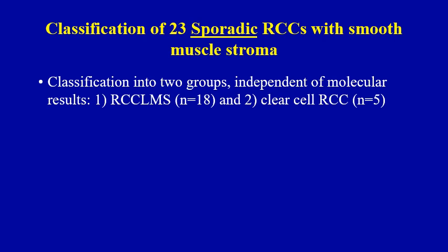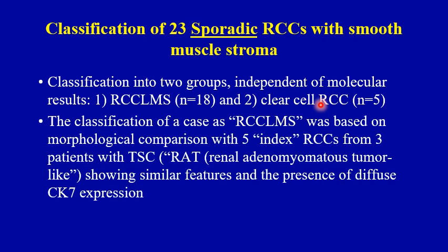To investigate these two questions, we interrogated 23 sporadic renal cell carcinomas with smooth muscle stroma and classified them blindly into two groups — RCC-LMS and clear cell RCC — independent of molecular results. Classification as RCC-LMS was based on morphological comparison with five index renal cell carcinomas from three TSC patients showing RAT-like morphology and the presence of diffuse CK-7 expression. We can therefore consider diffuse CK-7 expression as an inclusion criterion for this particular tumor entity.